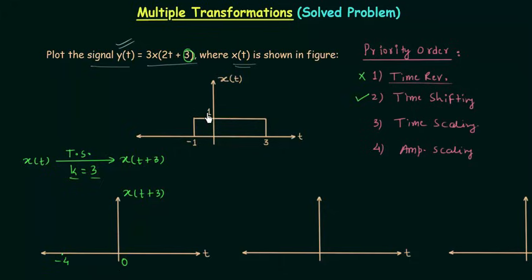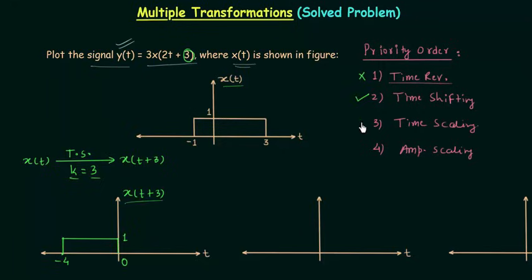The amplitude will remain the same in the case of time shifting. The amplitude is equal to 1 in the case of signal x(t), so we will have amplitude equal to 1 in the case of signal x(t+3). This is the waveform of this signal and now we will perform the time scaling.